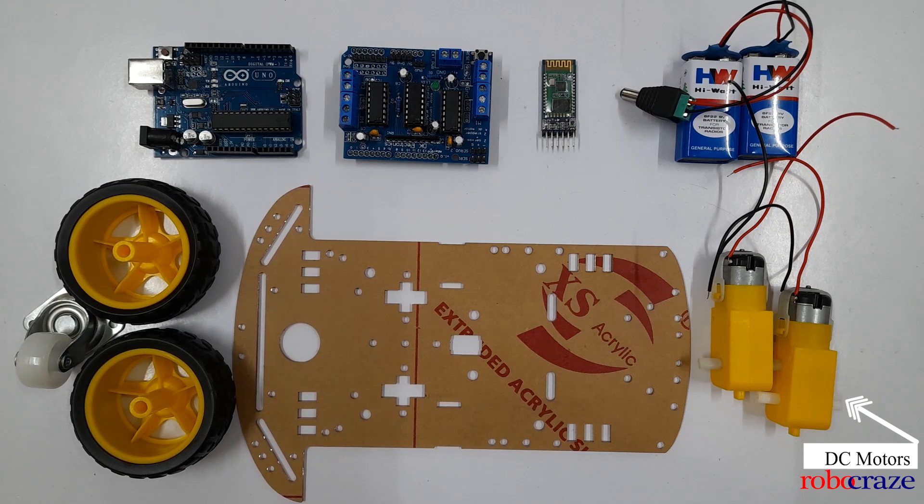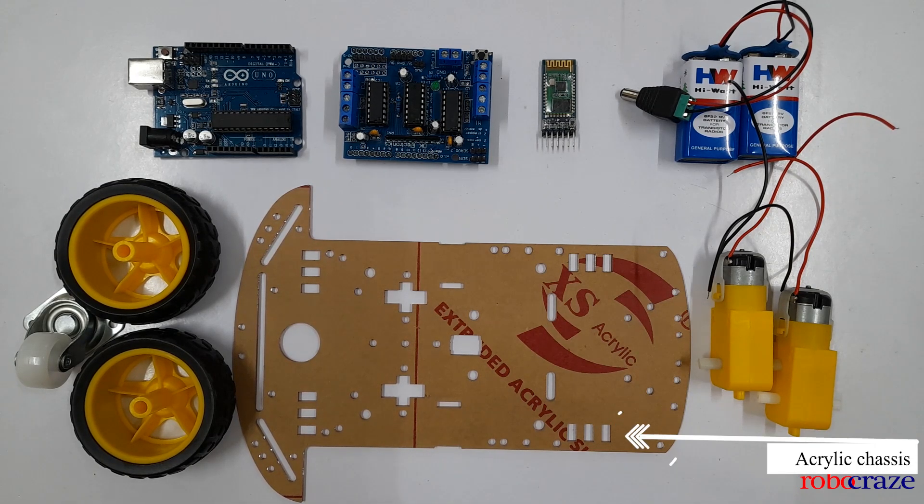Next up we'll be using acrylic chassis which serves as the frame or body of your car. It provides structural support, housing the motors, wheels and other components securely. So this is about all the components we'll be using in the Bluetooth controlled car.